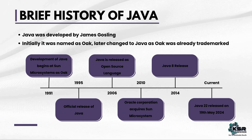Let us now see the brief history of Java. Java was developed by James Gosling from Sun Microsystems. Initially they named it Oak, but later changed it to Java because Oak was already trademarked. In 1991, Sun Microsystems started development. In 1995, the official release happened, and Java was open sourced in 2006. Oracle then acquired Sun Microsystems and started owning Java. In 2014, Java gained wide popularity. Currently Java is at version 22, releasing two versions every year.